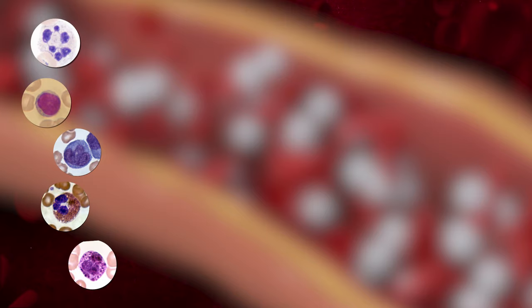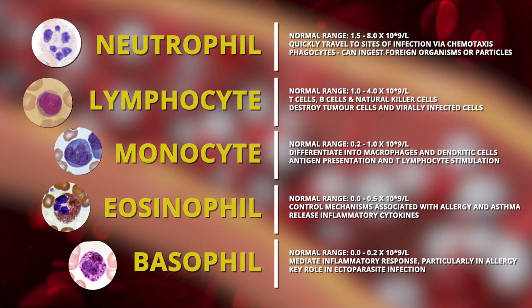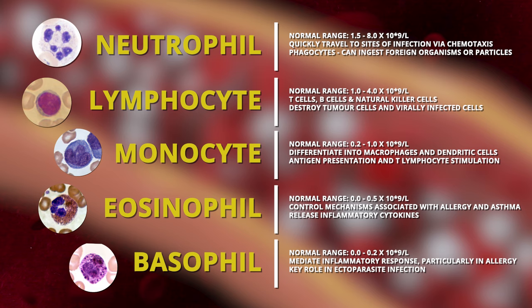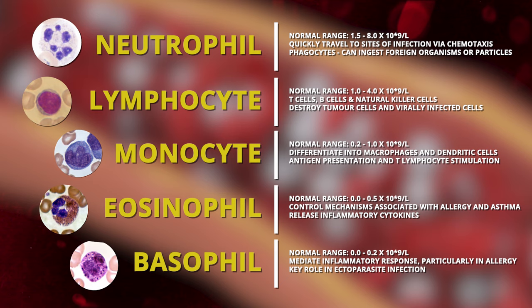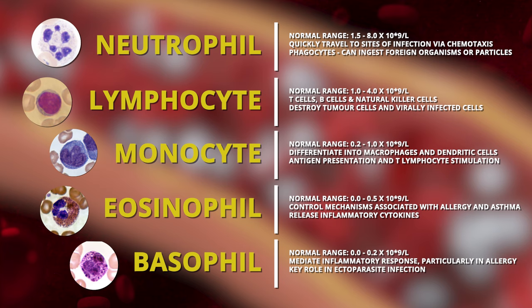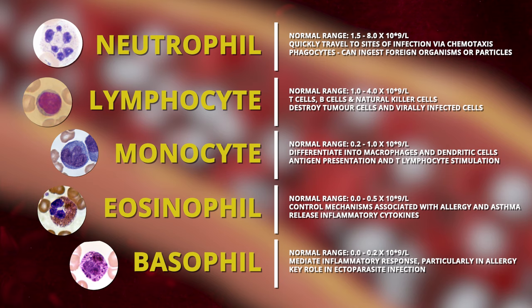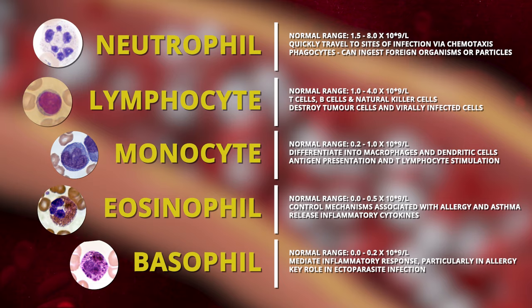The other important information we get is the breakdown of white cell types. White blood cells is a broad umbrella term — there are many types with many specific functions, and the different types can often be affected by drugs we give to patients. The most commonly measured types are neutrophils, lymphocytes, monocytes, eosinophils, and basophils. A brief description of each cell type, their main roles and functions, is shown on screen now so you can revisit these in your own time.